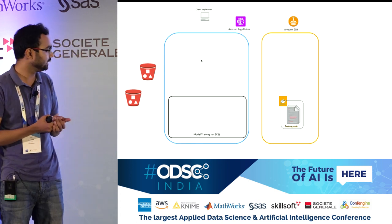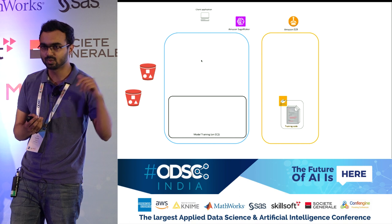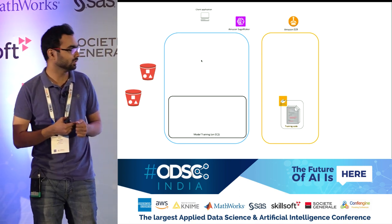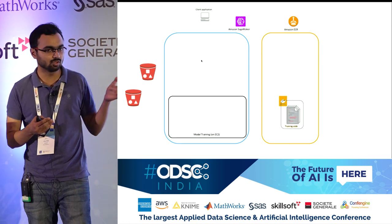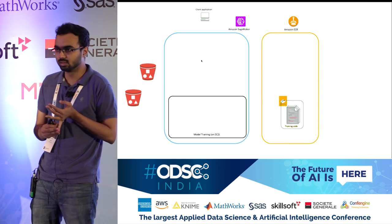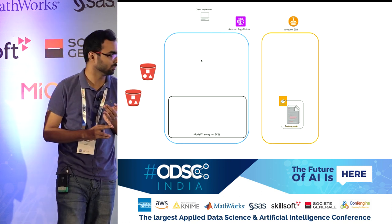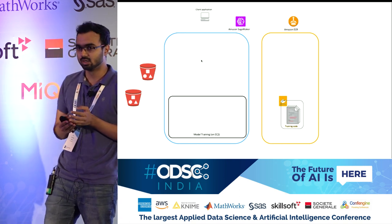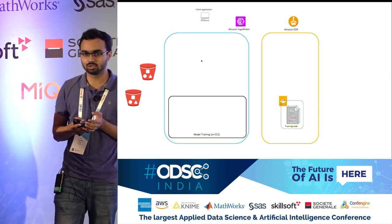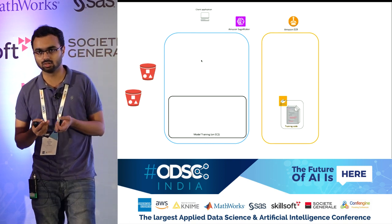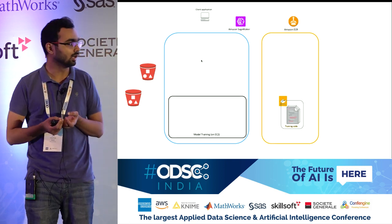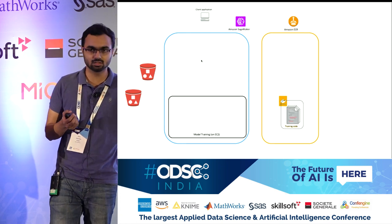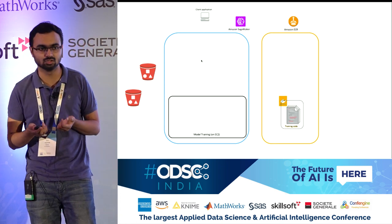Initially, the training data resides on S3 — those roughly 1,900 and 900 images. The training code, which is based on MXNet image classification algorithm, sits on ECR, which is Docker registry. We have containerized that particular algorithm so that anyone can pull it and start using it. The only prerequisite is that the data has to sit on S3.